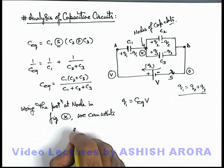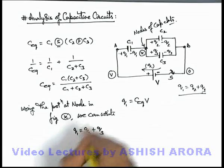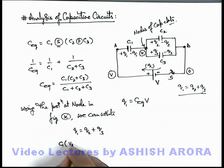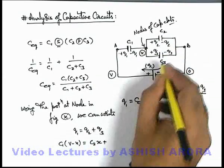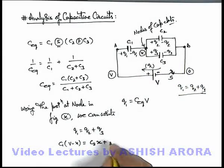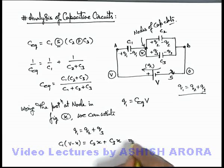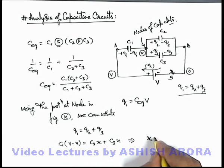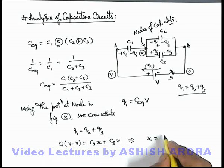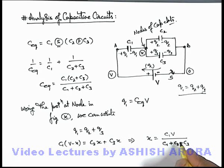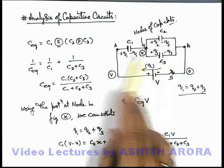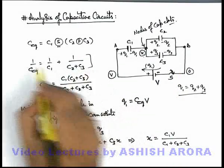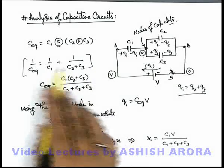Using Q1 = Q2 + Q3, we write: C1(V - x) = C2·x + C3·x. Simplifying this expression we directly get the value of x, which equals C1·V / (C1 + C2 + C3). So if we get the value of x, we get all the charges and all the potential differences of the circuit. The equivalent capacitance has been calculated using the concept of series-parallel analysis.